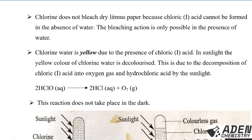Chlorine does not bleach dry litmus paper because hypochlorous acid cannot be formed in the absence of water. Chlorine must first dissolve in water to form chlorine water; without water there is no chlorine water, no hypochlorous acid, and therefore no bleaching action. Chlorine water is yellow in color, and this yellow color is due to the presence of hypochlorous acid.